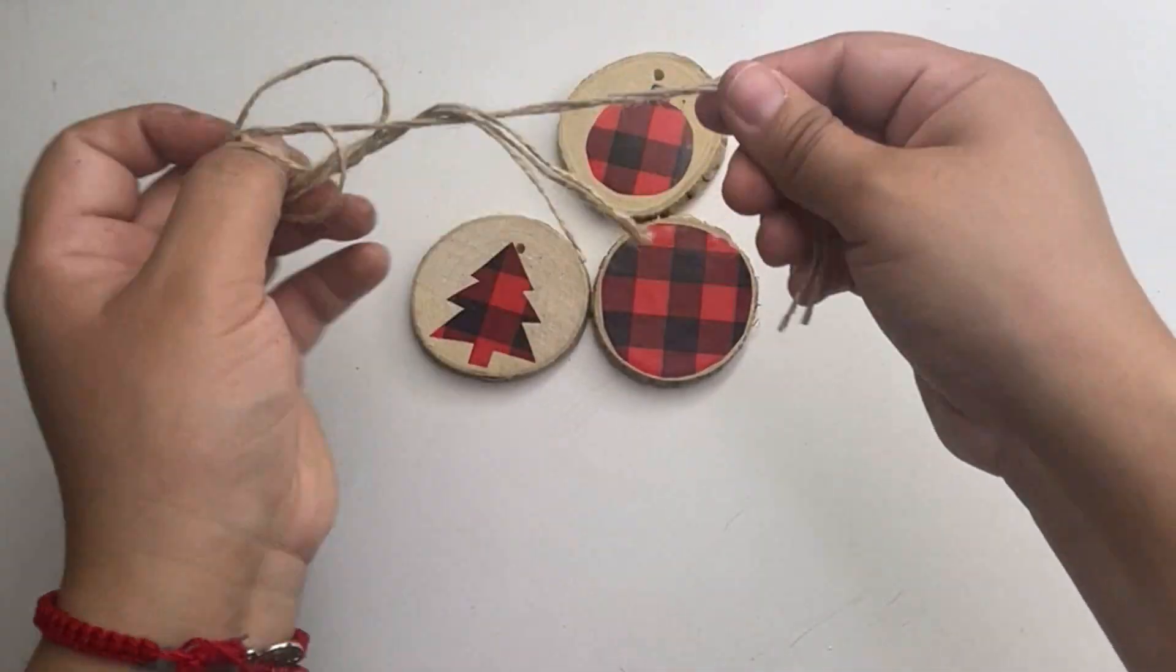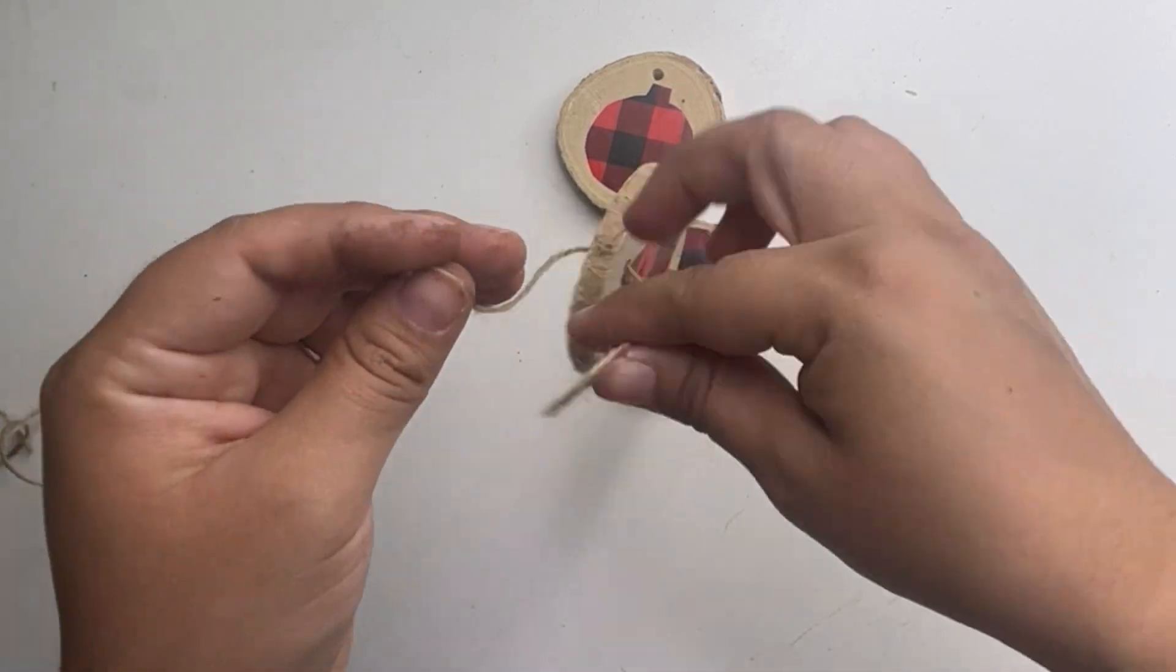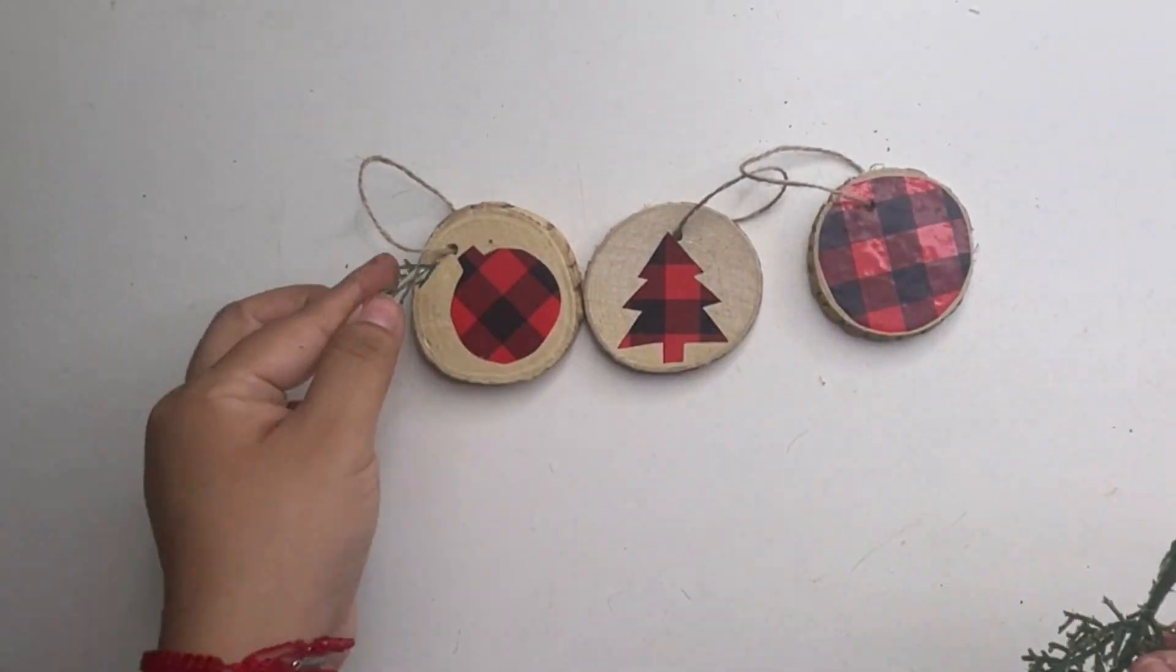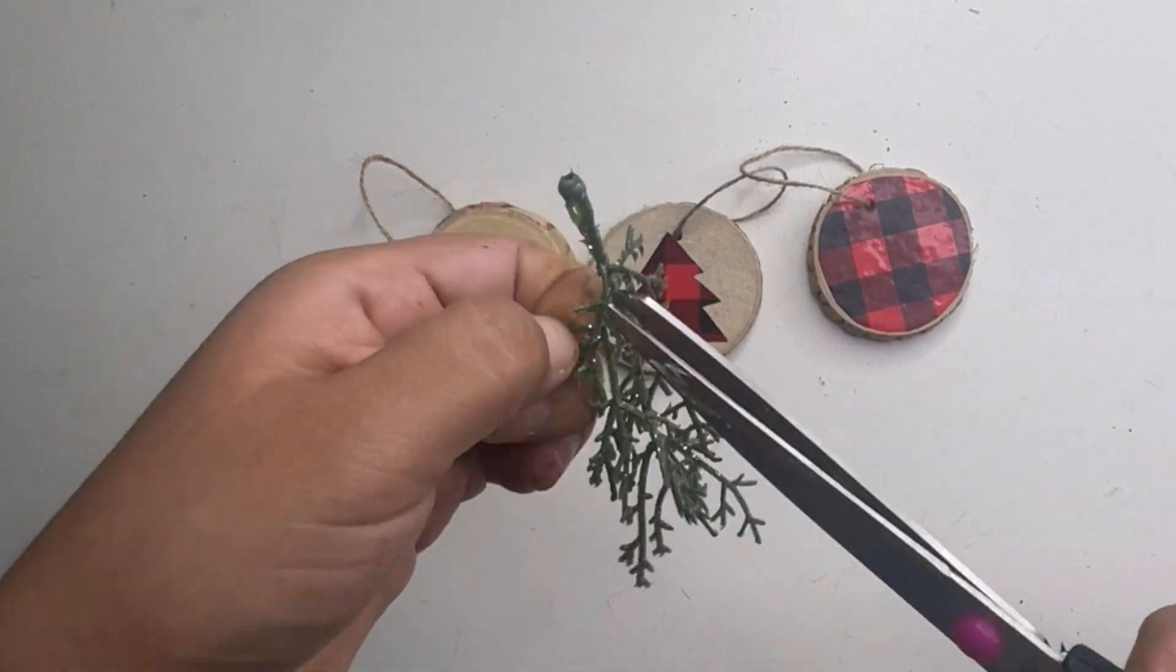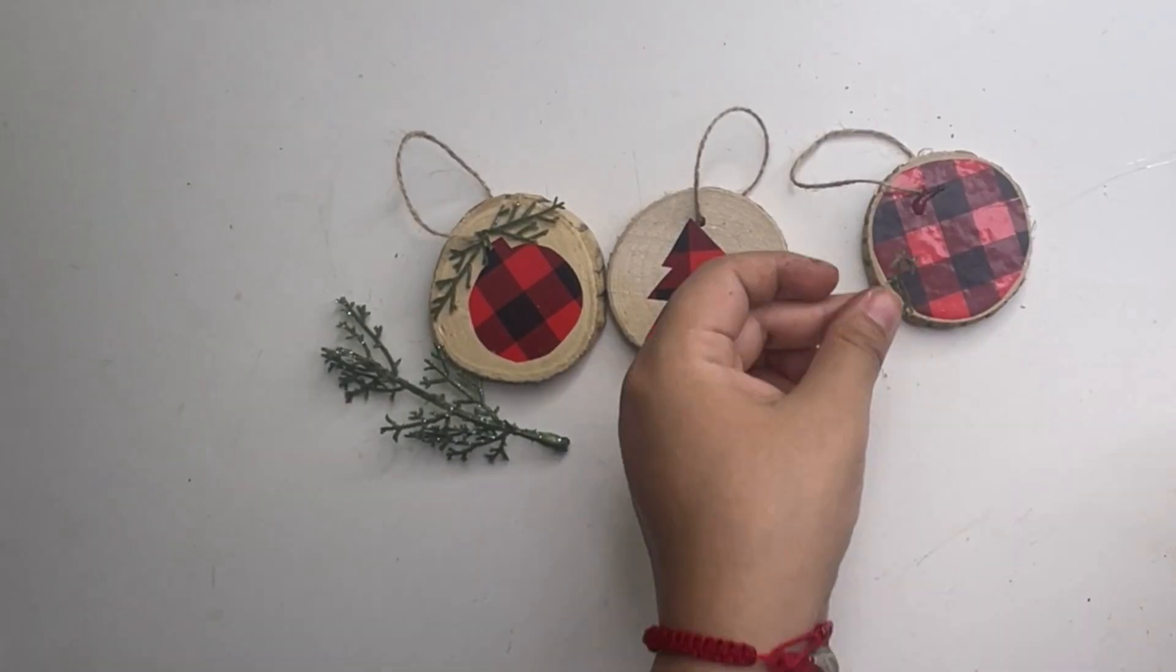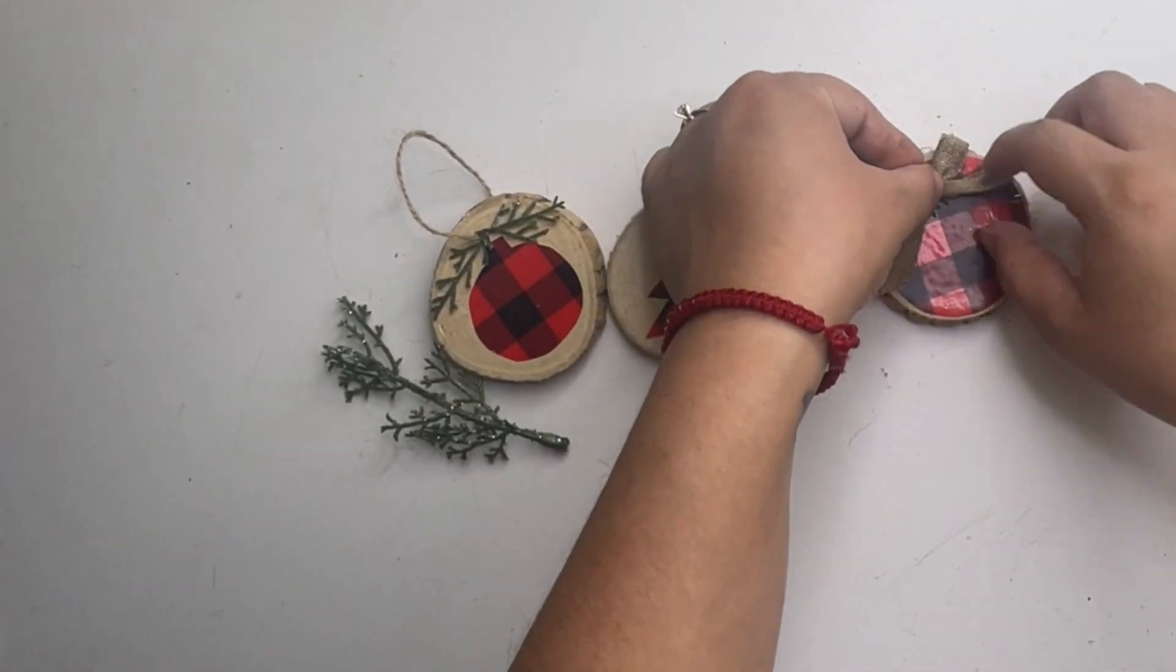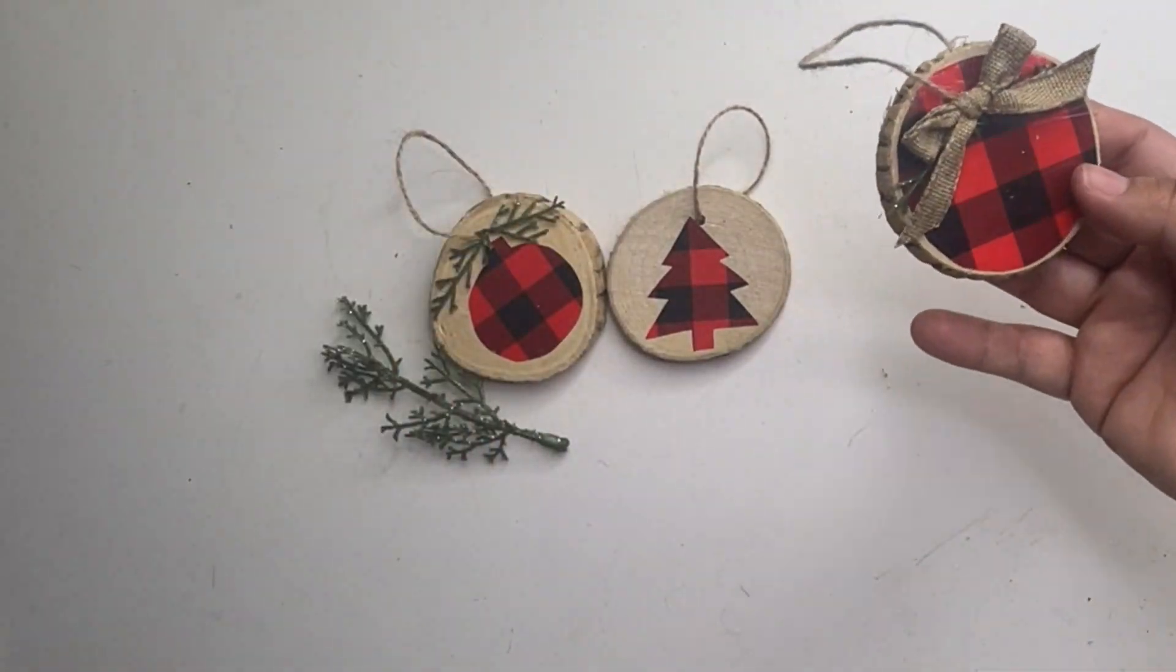Now these ornaments came with strings so I added the string. Then I decorated the ornaments just a tiny bit more by adding some greenery and a bow. And that is it, look how cute these ornaments turned out.